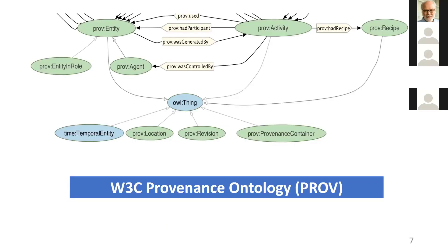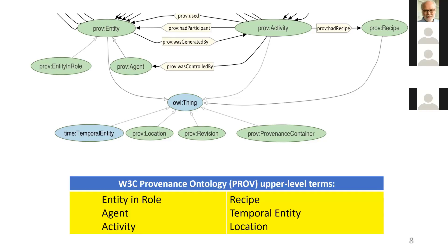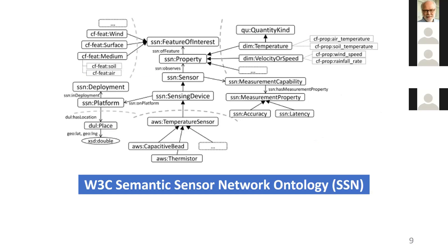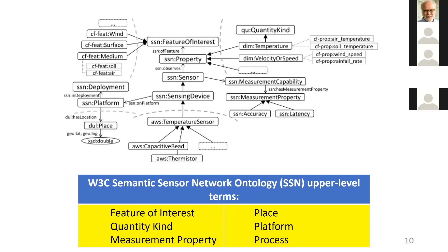This is a screenshot of the upper parts of the provenance ontology, and you can see that the top level terms in this ontology are as follows. And this is a screenshot of the upper parts of the semantic sensor network ontology, and the top level terms here are quite different.